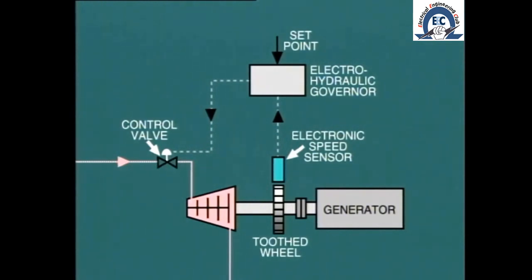The electronic signal is then processed and converted into a mechanical output that operates the pilot valve in the normal manner. In these governors, the set point and other adjustments are inputted electronically to the processor.